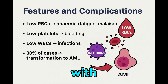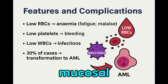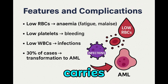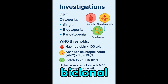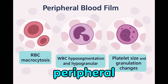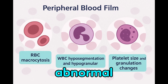MDS may present with symptoms related to cytopenias. Anemia is common, causing fatigue and often requiring transfusion. Low platelets may lead to petechiae and mucosal bleeding. Low white cells can cause recurrent infections. Approximately 30% of MDS patients progress to AML, and transformation carries a poorer prognosis than de novo AML. Cytopenia may be single, bilineage, or pancytopenia depending on disease stage. WHO thresholds include hemoglobin below 100 g/L, ANC less than 1.8, and platelets below 100. Peripheral smear may show macrocytosis, hypogranular neutrophils with hyposegmentation, and abnormal platelet morphology.